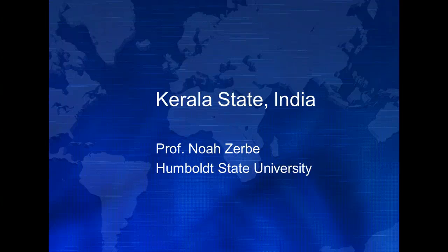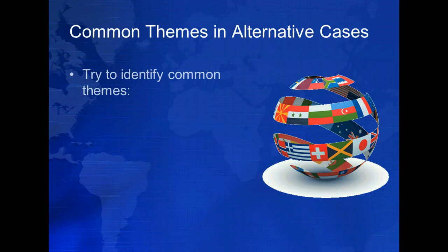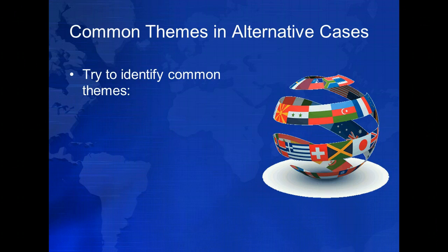The first alternative model of development we'll look at is Kerala State in India. Before we do, I'd like to draw your attention to several questions I'd like you to consider as we view the various alternative models of development we're looking at this week. As you move through each of the cases, think about the following questions.